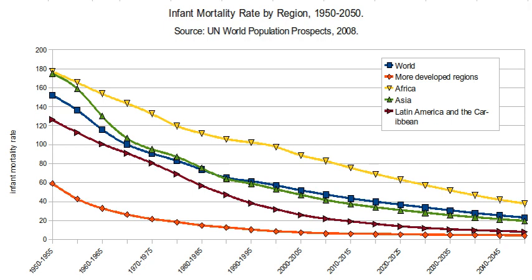The infant mortality rate in the U.S. decreased by 2.3% to a historic low of 582 infant deaths per 100,000 live births in 2014. Of the 27 most developed countries, the U.S. has the highest infant mortality rate despite spending much more on health care per capita. Significant racial and socioeconomic differences in the United States affect the IMR, in contrast with other developed countries which have more homogeneous populations. IMR varies greatly by race in the U.S.